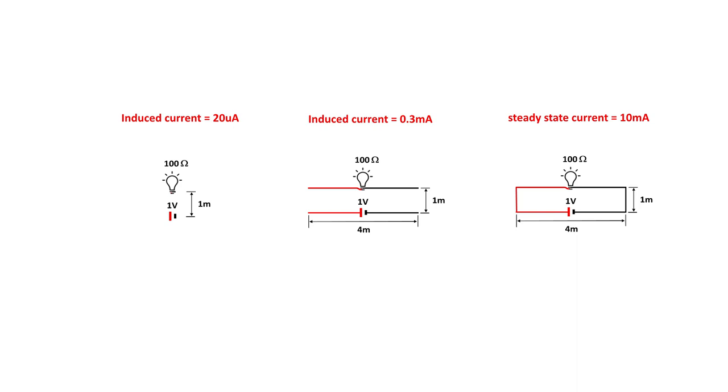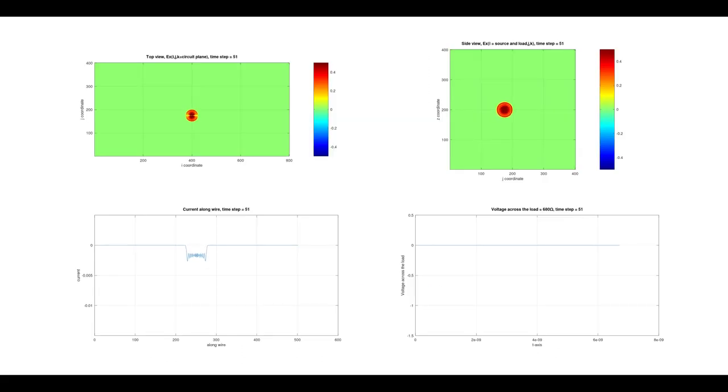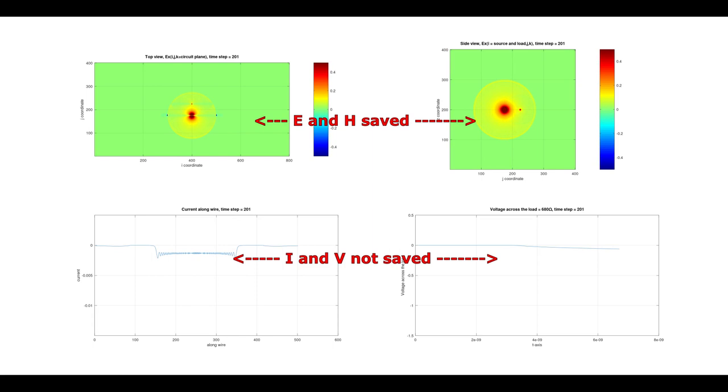Of course, the basic circuit theory can predict the steady state current for the closed circuit, but only Maxwell's equations can predict the induced current for the open circuits. The FDTD method is computationally intensive, so at times I had to split a long simulation into multiple parts so as to check the intermediate results. For example, in this simulation, the simulation stopped at N equal to 201, and only the E field and the H field everywhere in space were saved for the next simulation to continue.